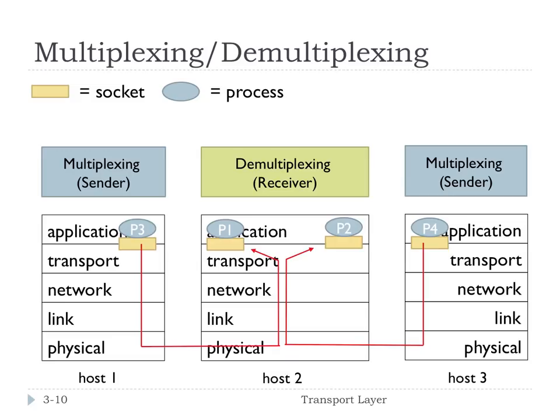What is the distinguishing identifier we use to determine what process needs to receive a transport layer segment? Port number. The port number is the key distinguishing element — this message from P3 goes to P1 versus P2. The receiver is doing the demultiplexing, and the sender is doing the multiplexing.